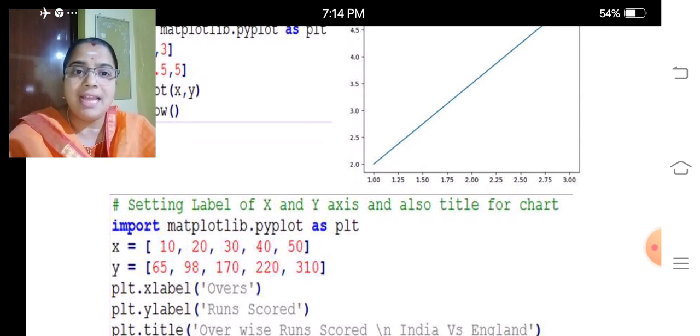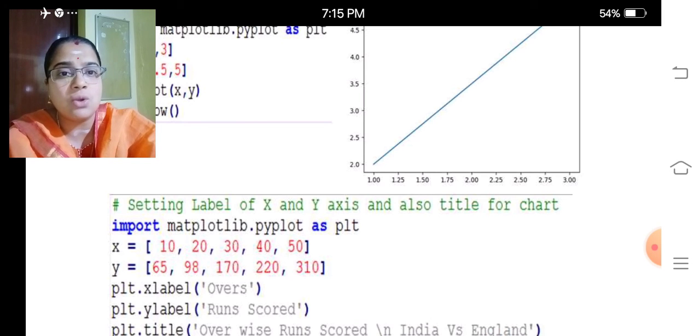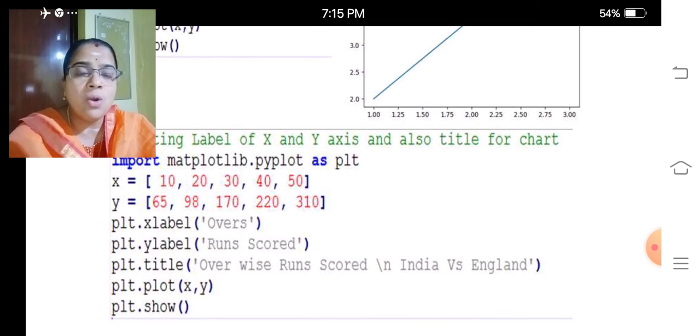plt.xlabel is a function for setting the label for the x-axis, and plt.ylabel is for setting the label for the y-axis. So 'Overs' and 'Runs Scored'. Then plt.title for the title: 'Over wise Runs Scored India Vs England'.